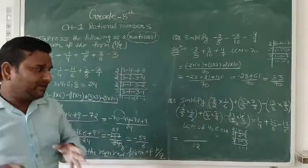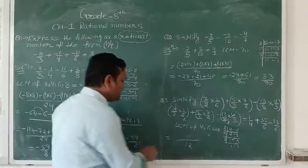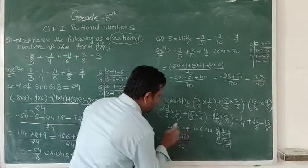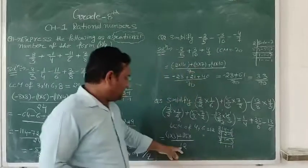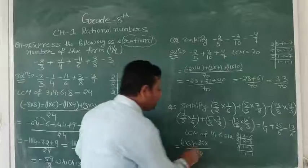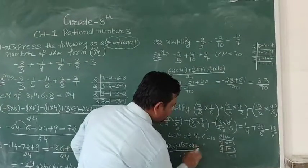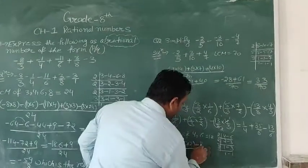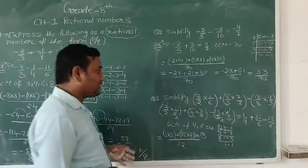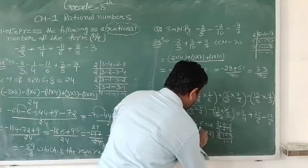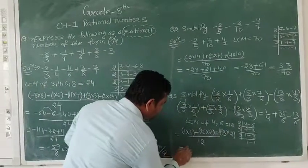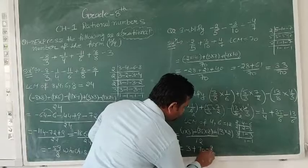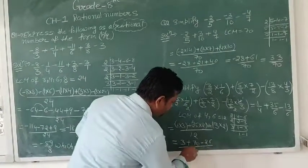For 1 upon 4: multiply by 3 to get 12, so 1 times 3 = 3. For 35 upon 6: multiply by 2 to get 12, so 35 times 2 = 70. Be careful about the sign — for minus 30 upon 6: multiply by 2, so 30 times 2 = 60. We get: 3 plus 70 minus 60, upon 12.